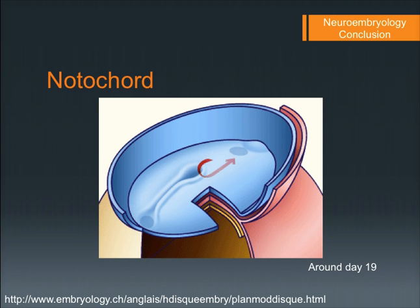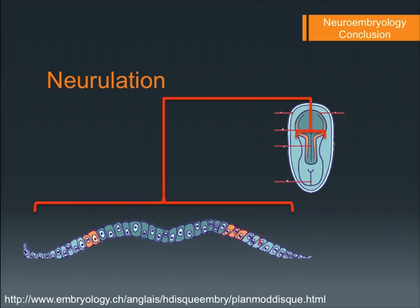The notochord begins at the primitive pit, dives down, and moves towards the cephalic end. The notochord is the signalling centre that causes the epiblast to start differentiating into the neural plate and begins neurulation.